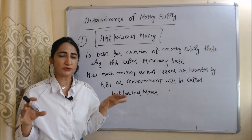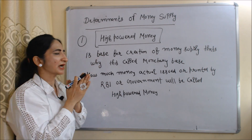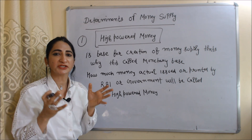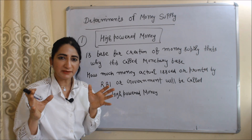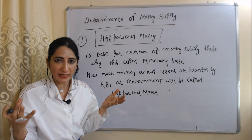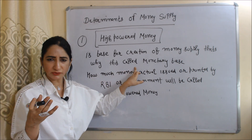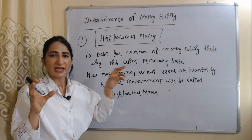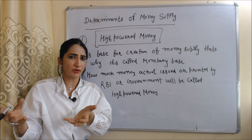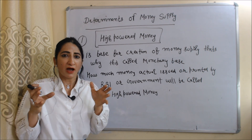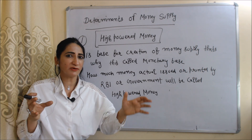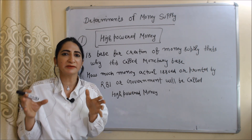Now we are going to talk about two determinants of money supply. The first is high powered money. High powered money is the base for creation of money supply, that's why it is also called the monetary base. In our country, only RBI and the government have the power to issue or print notes. How much money is actually issued or printed by RBI or the government is called high powered money.